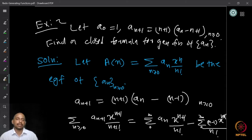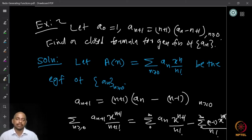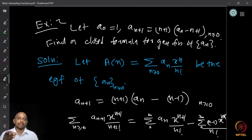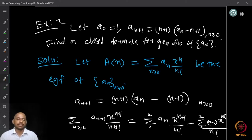Let's take another example: a₀ = 1 and aₙ₊₁ = (n+1)aₙ − (n+1) for n ≥ 0. Find a closed formula for the sequence. We can check that the ordinary generating function does not work because (n+1) is multiplying every time, so the coefficients grow very fast. We will try the exponential generating function: A(x) = ∑ aₙ · xⁿ/n!.